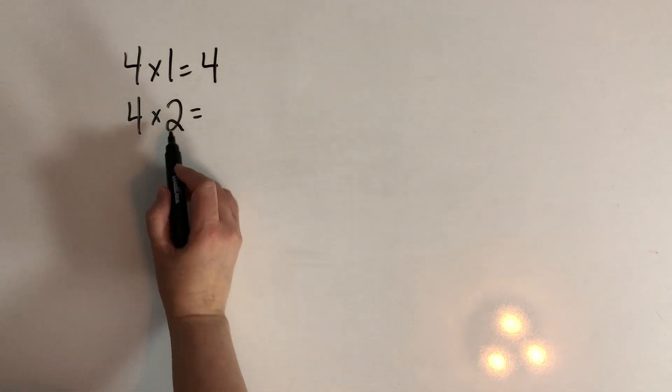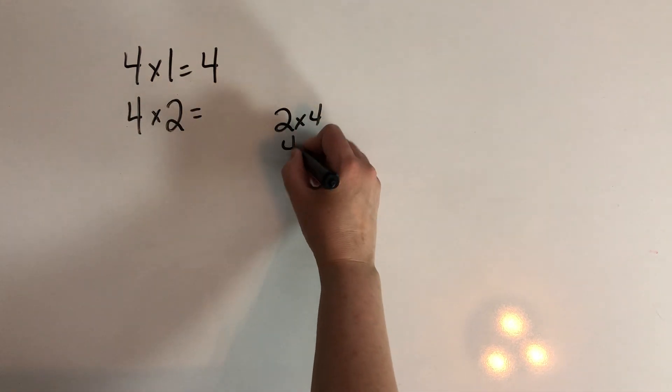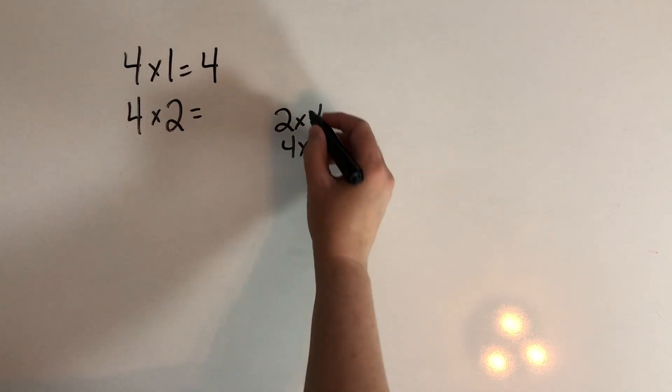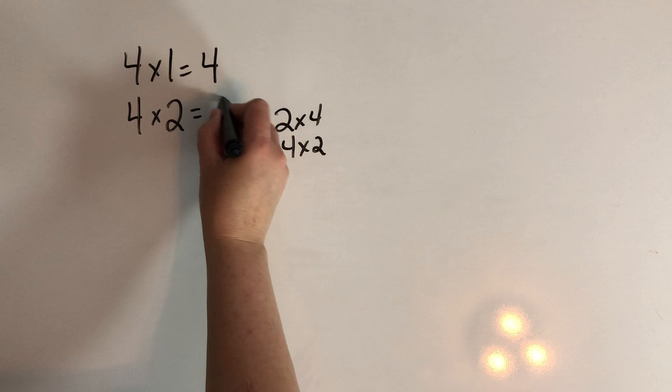For this one we could think two times four because we know those are the same, aren't they? Two times four and four times two have the same product. So I'm going to think, okay, two times four or the double of four—that one's eight.